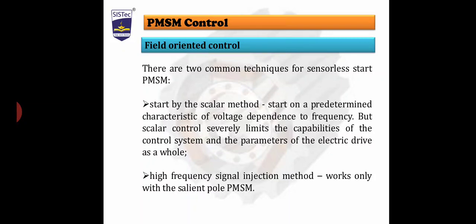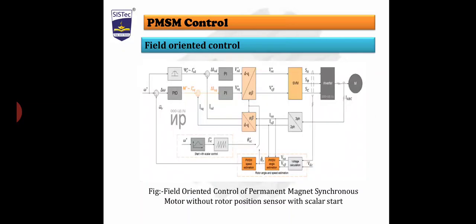This second method works only with salient pole permanent magnet synchronous motors. It means the high frequency signal injection method is not applicable for non-salient pole type synchronous machines or cylindrical rotor type synchronous machines.